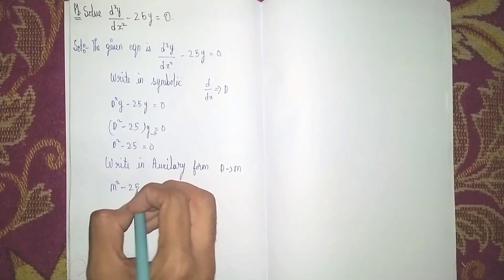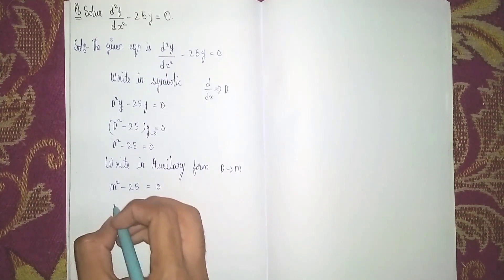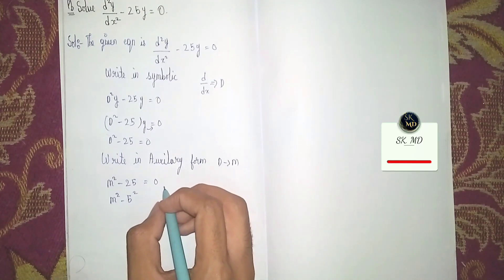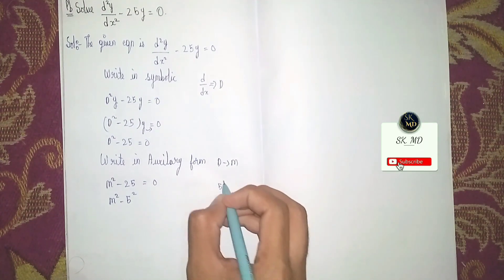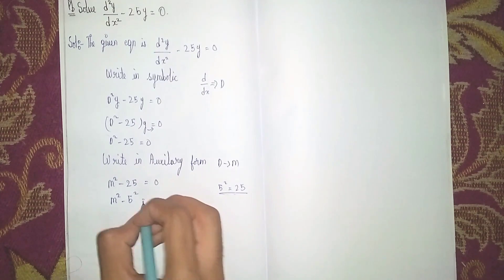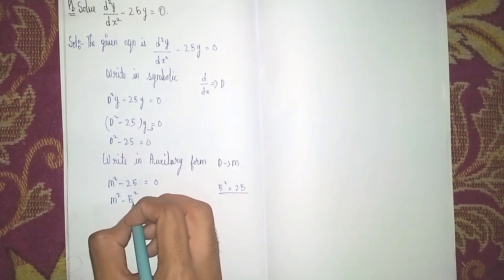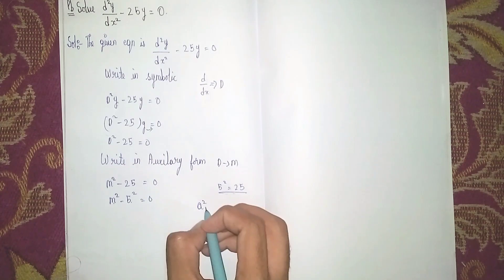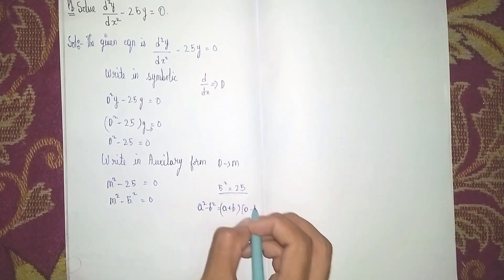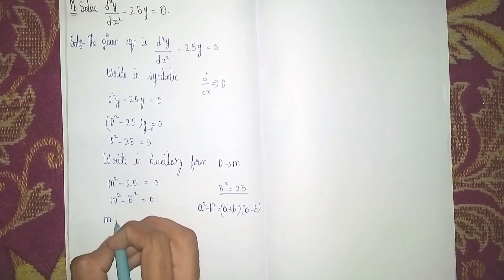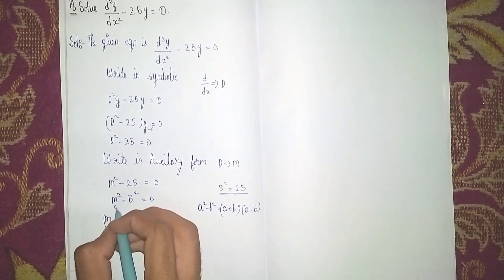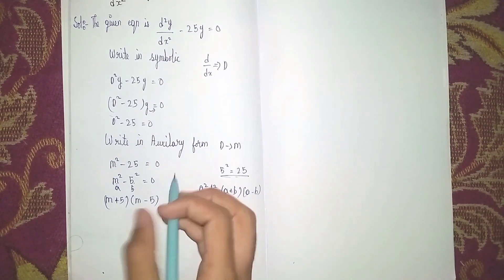We can write 25 as 5², so the equation becomes m² minus 5² equals zero. This fits the formula a² minus b² equals (a + b)(a − b). So it becomes (m + 5)(m − 5) equals zero, where a is m and b is 5.